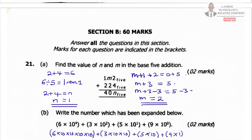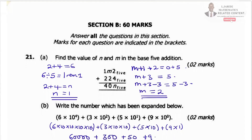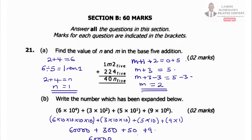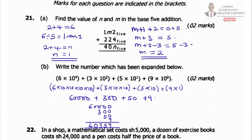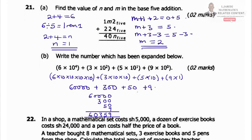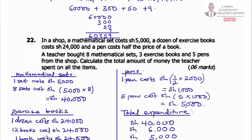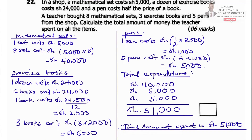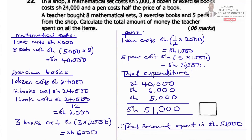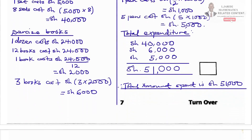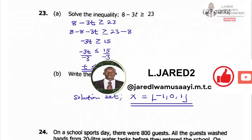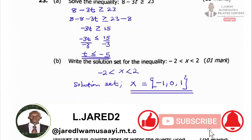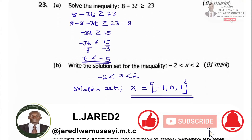Section B, beginning with number 21. Number 22, 23 — and continuing through the section.